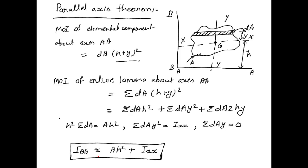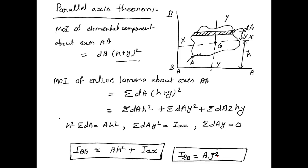Similarly, if we want to find the moment of inertia about axis BB, taking the distance as J, it will be IBB = A·J² + IYY. This is the parallel axis theorem applied to axis BB.